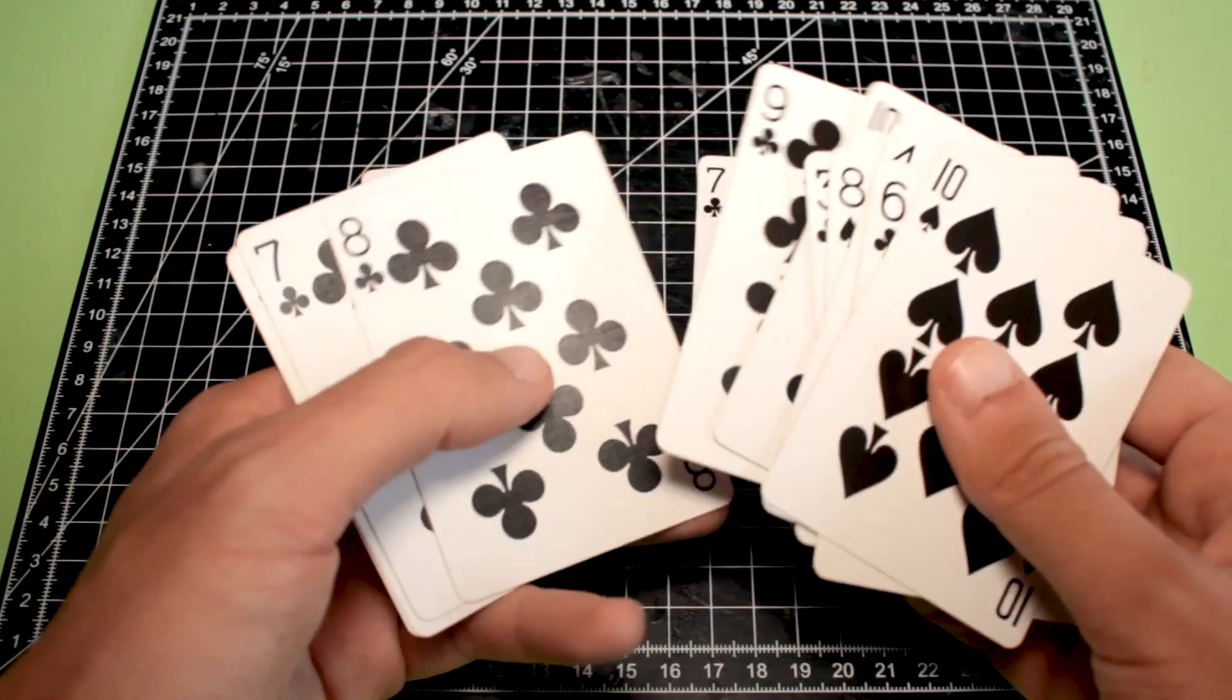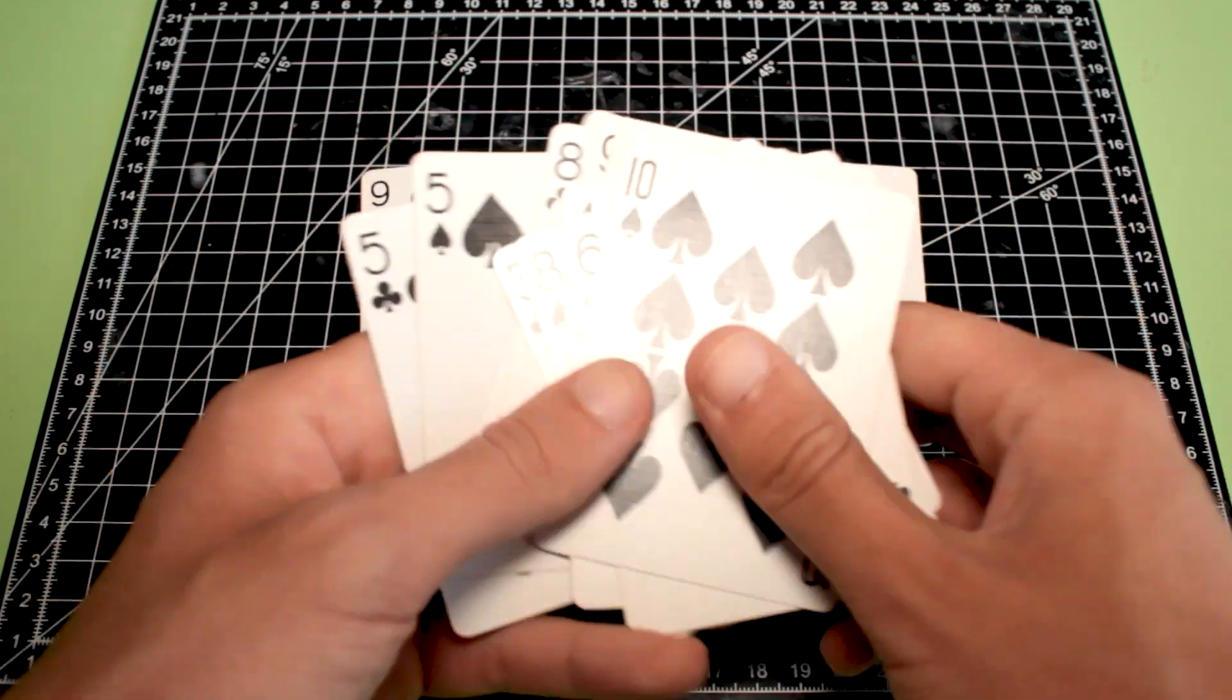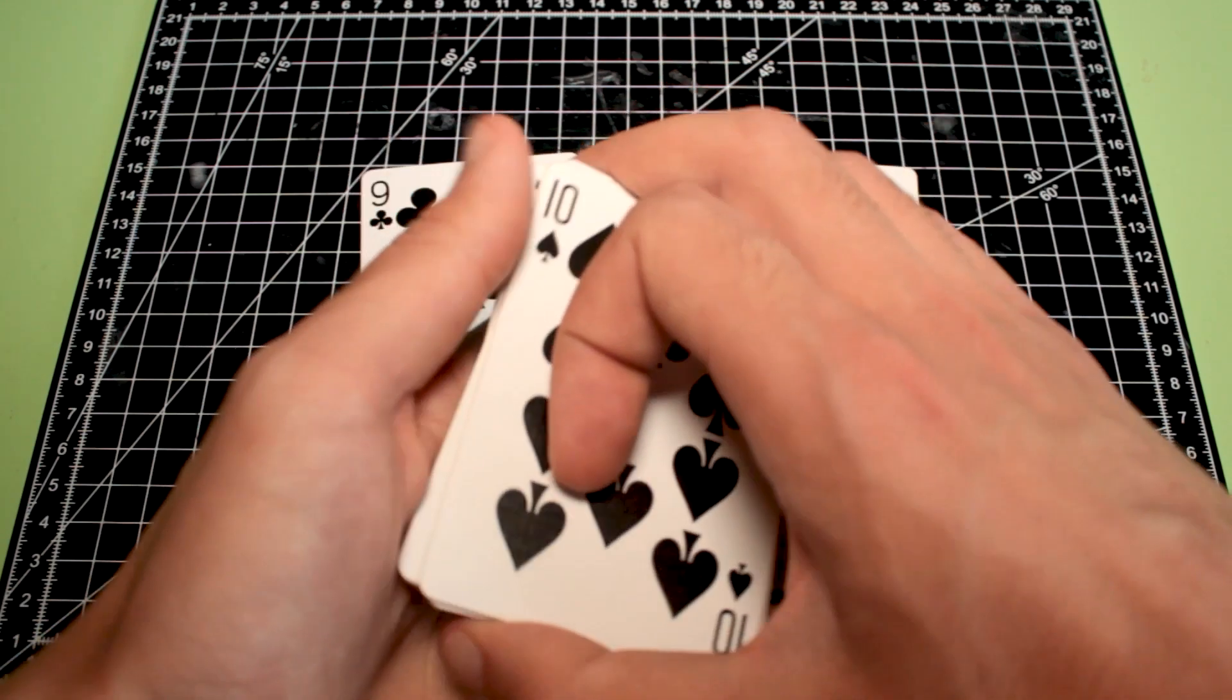Ideal cards would be the 10 of clubs, the 8 of clubs, the 9 of clubs, so choose the card that you prefer.